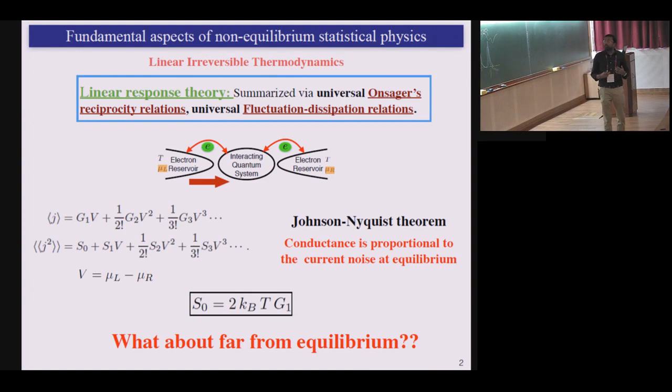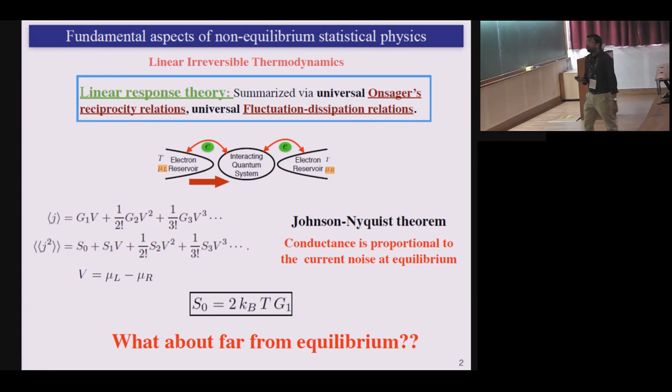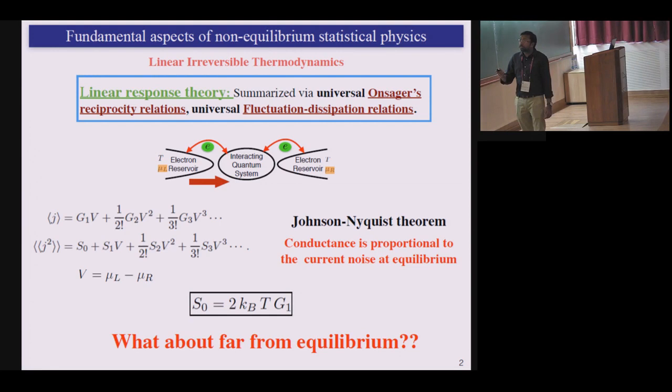So before getting into any details, let us just very quickly recall what we know from non-equilibrium physics in the context of linear irreversible thermodynamics. So as you all probably know that when you take a system and you drive it out of equilibrium, let's say by putting two baths which are at different chemical potential, and if this bias difference is not too large, then you are basically at the linear response regime and you start to get various type of universal relations. And these are sort of relations that you have, namely, Onsager reciprocal relations. You also have so-called universal fluctuation-dissipation relation.